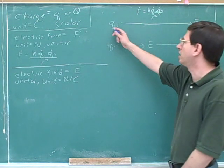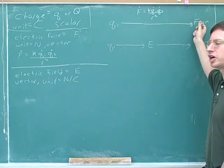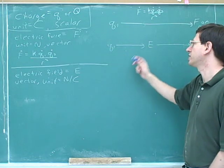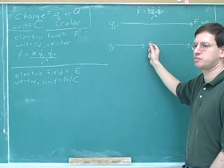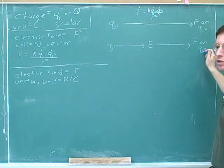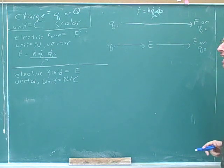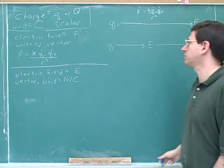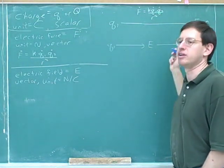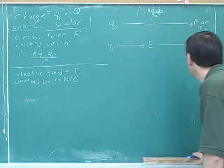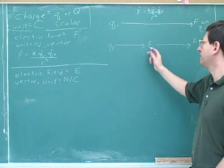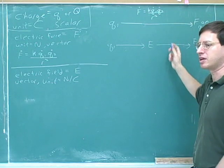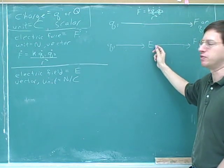Instead of thinking of one charge directly exerting a force on another charge, we're going to think of another useful way: one charge creates a field in space, and that field exerts the force on charge two. You can also say that charge two is creating a field that exerts a force on charge one, but to keep things simple we're just going to look at it in one direction. You can see why we might think of the electric field as the middleman — both approaches are correct.